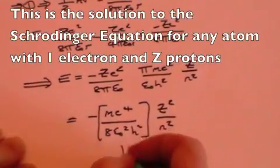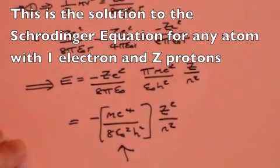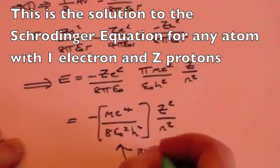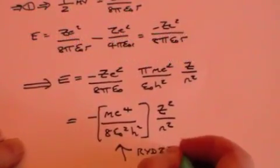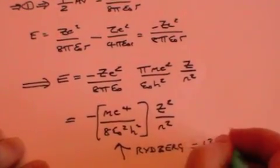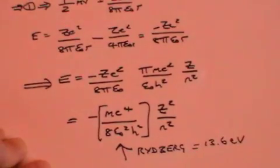But if you look, this term is just a constant, and it's often called the Rydberg constant, r. And if you calculate it, you will find it comes to 13.6 electron volts.